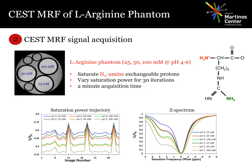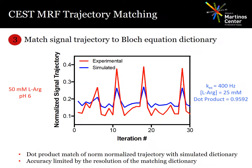To test the CEST MRF method, we used L-arginine phantoms with different concentrations and pH. The acquisition schedule had 30 frames of randomly selected saturation powers. The saturation frequency offset was fixed at the amine proton chemical shift, which is 3 ppm. The total scan time for the 30 measurements was only 2 minutes. The acquired data was matched to a dictionary pixel by pixel, using the vector dot product as the pattern matching metric.